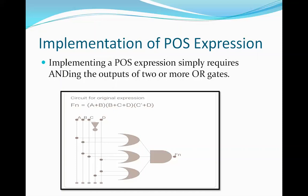The number of OR gates is decided by the number of terms in the expression. For example, consider the function: (A or B) multiplied by (B or C or D) multiplied by (C-complement or D). This expression contains three terms all ANDed together, so the implementation of this function requires three OR gates and one AND gate.